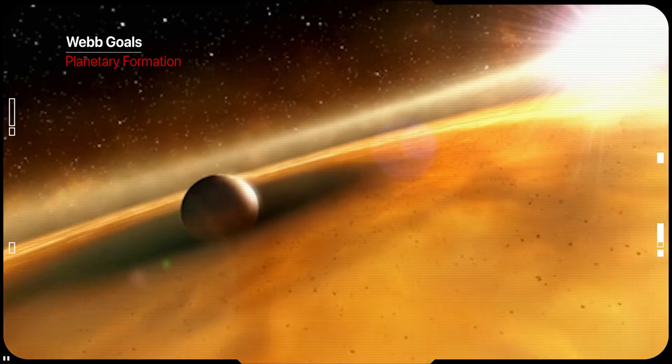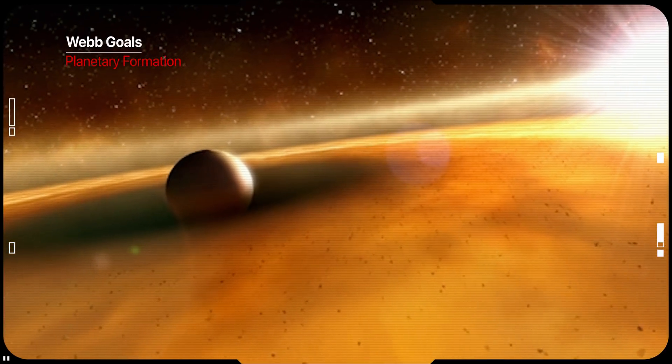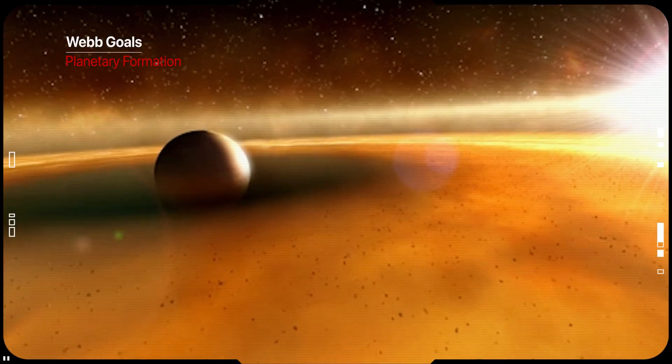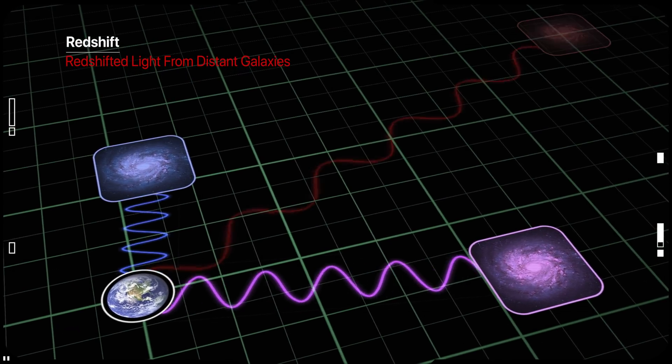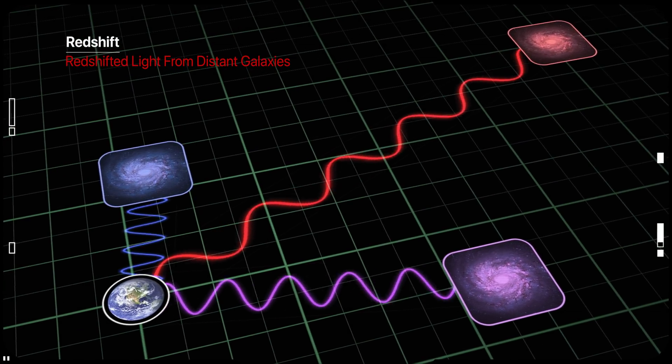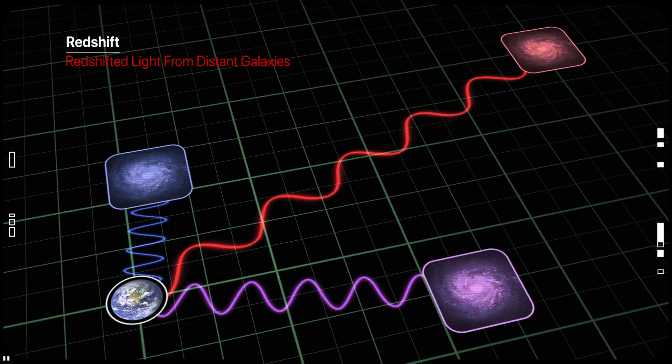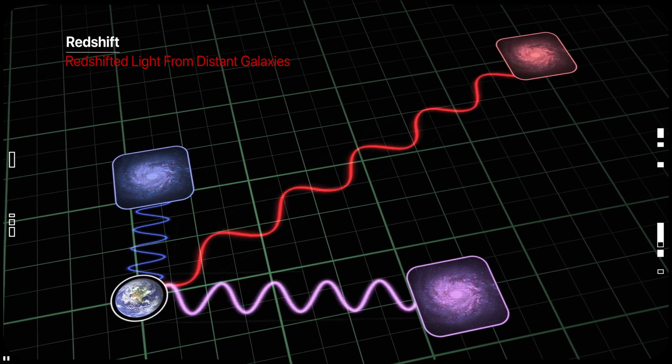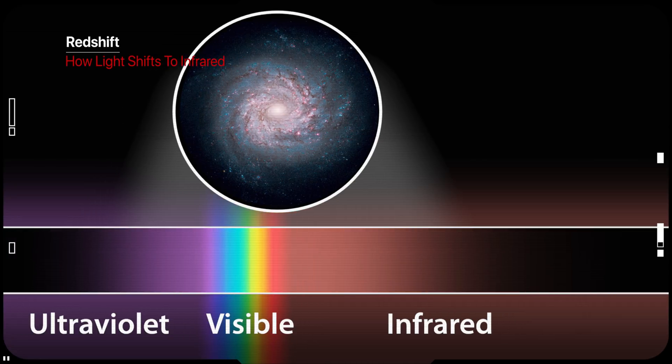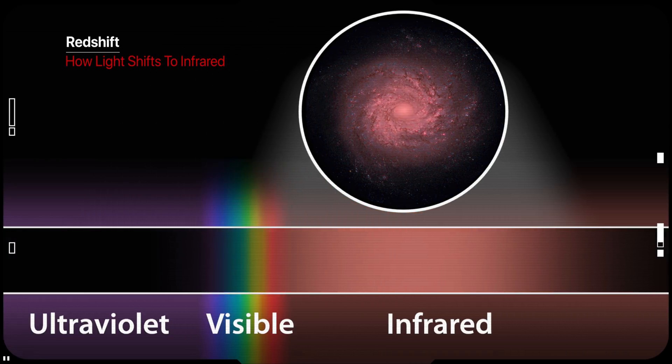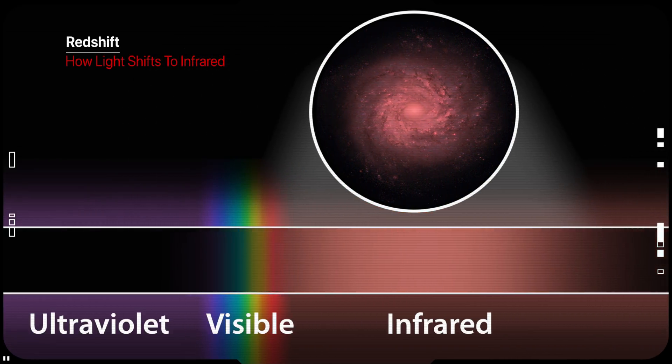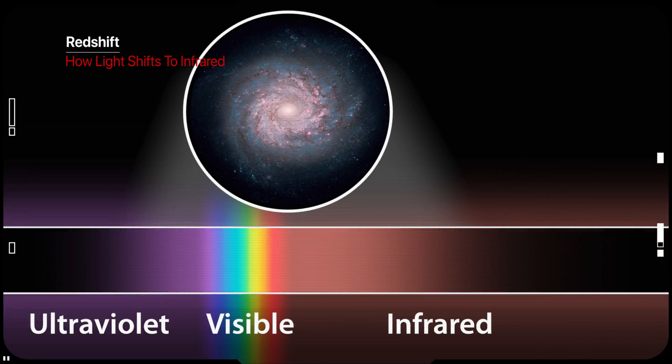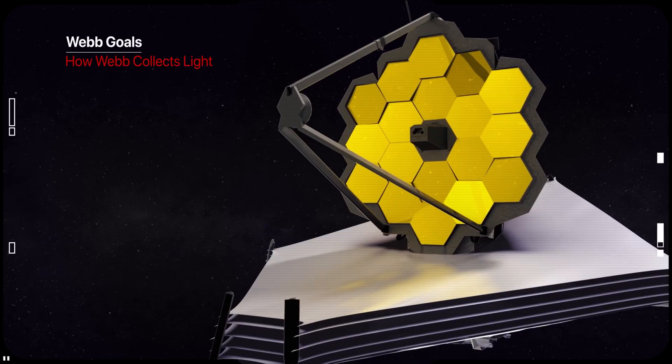The universe is expanding and therefore, the farther we look, the faster objects are moving away from us, redshifting the light. Redshift means that the light that is emitted as ultraviolet or visible light is shifted more and more to redder wavelengths, into the near and mid-infrared part of the electromagnetic spectrum for very high redshifts. Therefore, we have to observe infrared light and use a telescope optimized for this light.